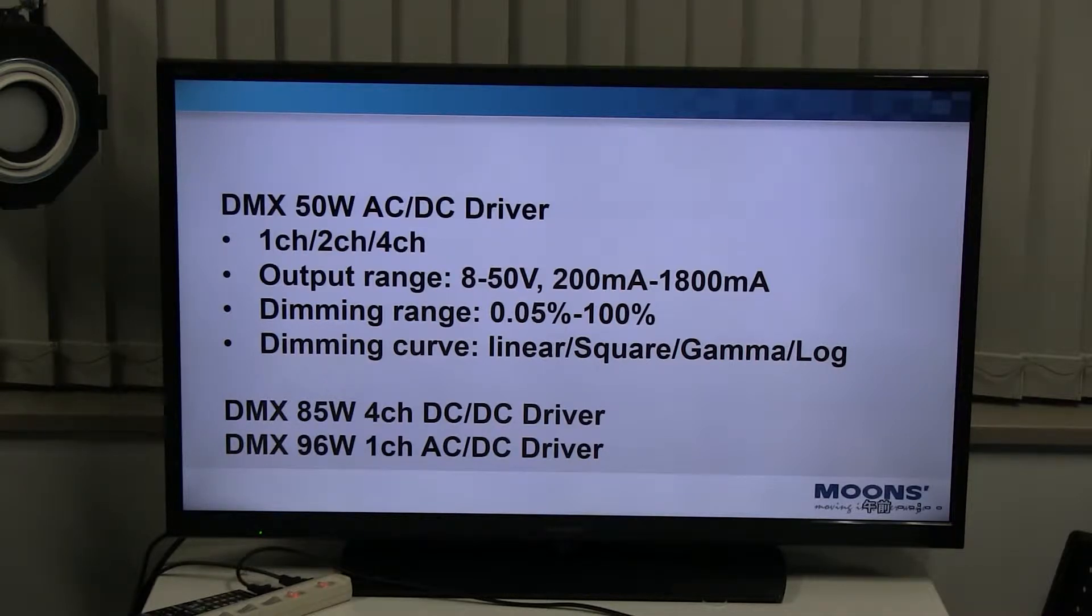Those drivers dimming range 0.05% to 100%. There are four dimming curves, namely linear, square, gamma, and log. The 85 wattages products are 4 outputs, DC to DC power supplies. The 96 wattage products are single outputs, AC to DC power supplies.